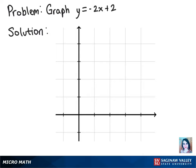So we can graph the y-intercept at (0, 2), and then we know that our slope is negative 2, which means that we go down 2 and over 1. And once we connect these two points, we have our line, and that is our solution.